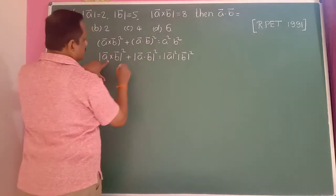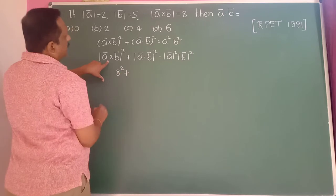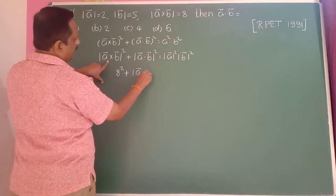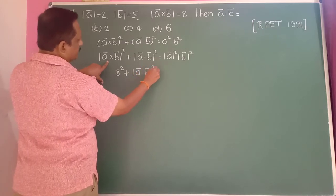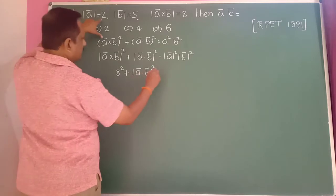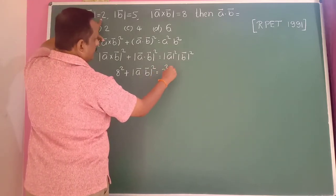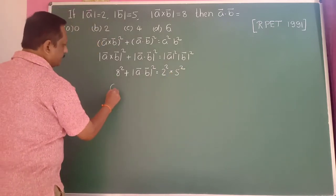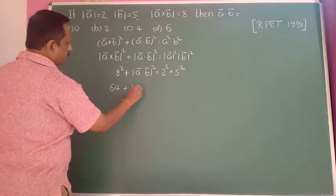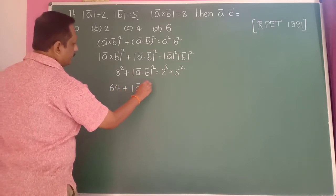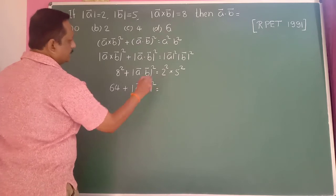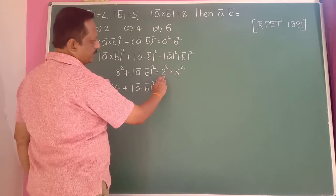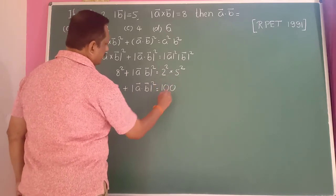Substituting: a-bar cross b-bar is 8, so 8 squared is 64. Then plus a-bar dot b-bar whole squared equals modulus of a-bar squared into modulus of b-bar squared. Modulus of b-bar is 5, so 5 squared is 25. Modulus of a-bar is 2, so 2 squared is 4. And 25 times 4 equals 100. Taking 64 to the right-hand side.